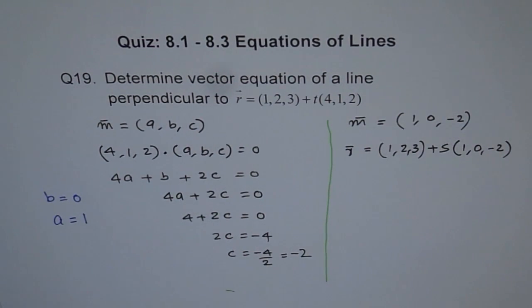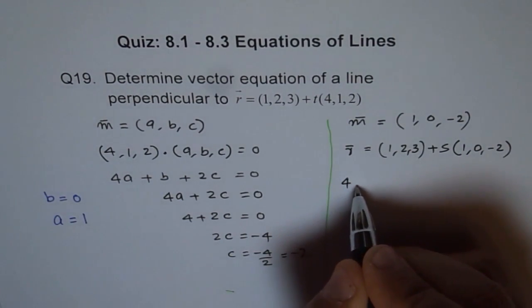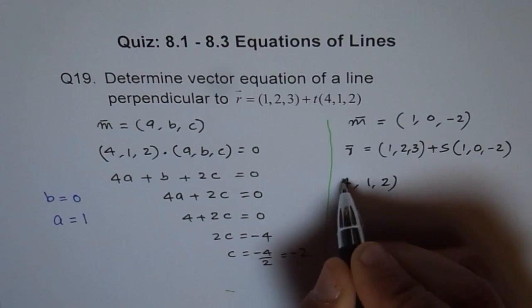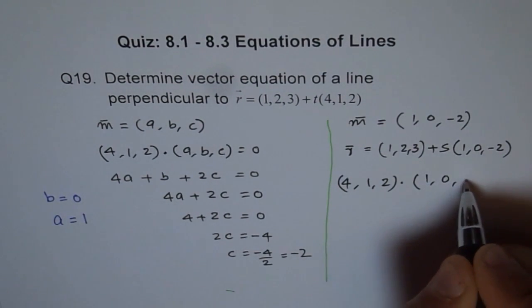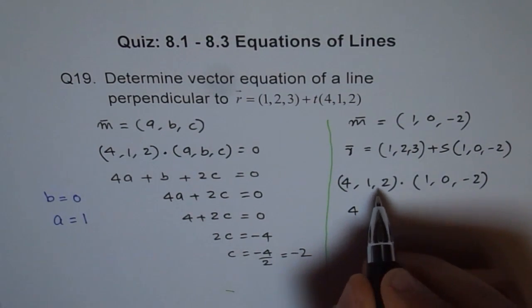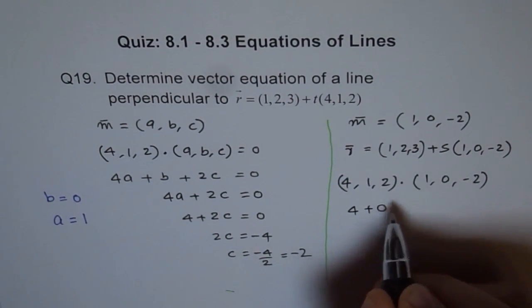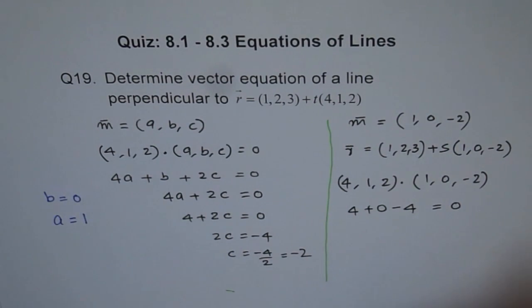How will you show it? You can always find dot product between these two, just to be sure. (4, 1, 2) dot (1, 0, minus 2). Let's see what this is. 4 times 1 is 4, 1 times 0 is 0, and 2 times minus 2 is minus 4. And we get 0. Perfect. So this is just the right answer we're looking for.